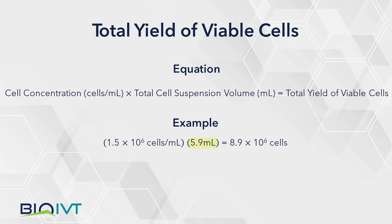In this example, 5.9 milliliters of cell suspension remain, and the concentration is 1.5 times 10 to the sixth cells per milliliter. Total cell yield is therefore 8.9 times 10 to the sixth cells, the product of 5.9 milliliters multiplied by 1.5 times 10 to the sixth cells per milliliter.